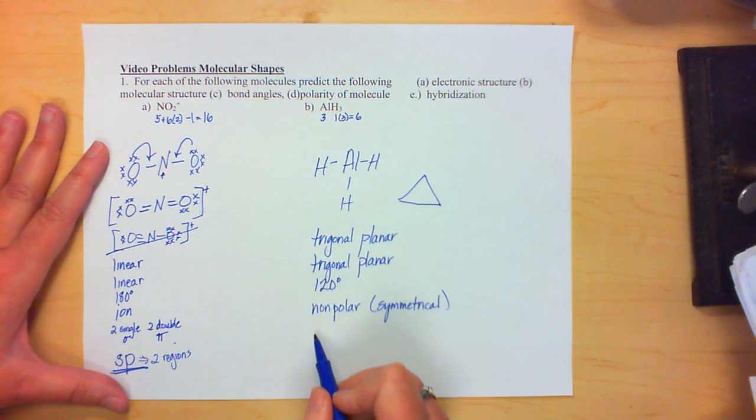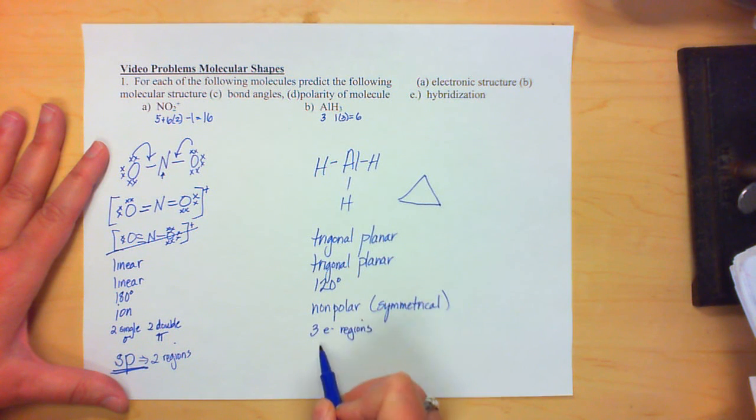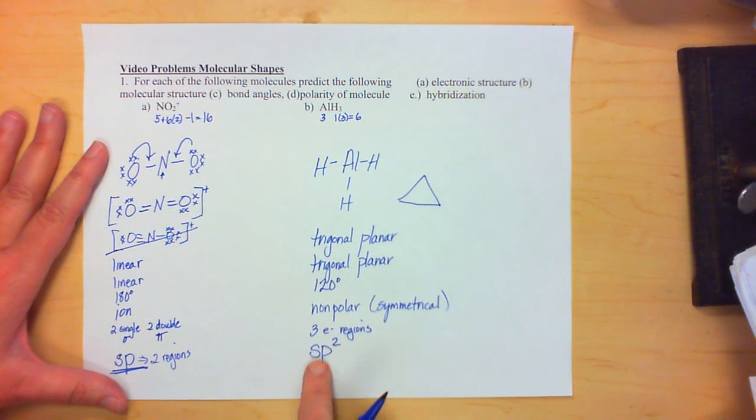Hybridization, again, we're looking for three electron regions. And so it'd be sp2. So you're going to hybridize one s and two p orbitals together.